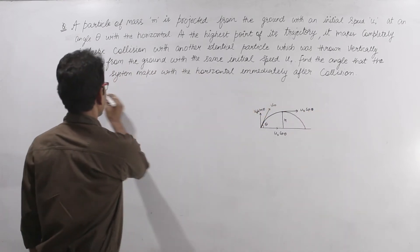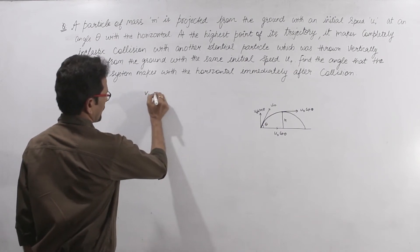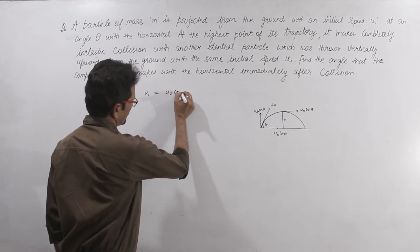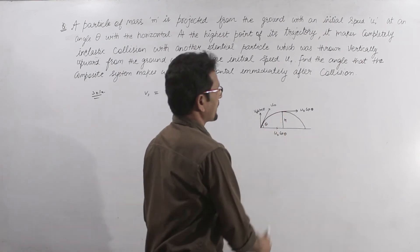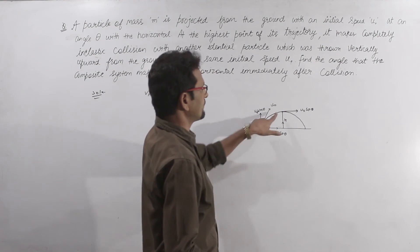At the highest point, the distance is u0 cos theta, right? Now we need to know this particle's velocity here. This velocity is v2.